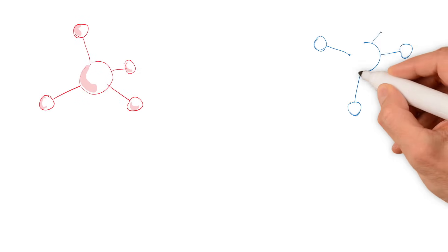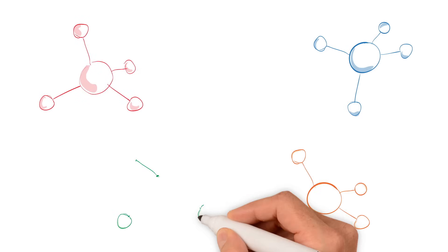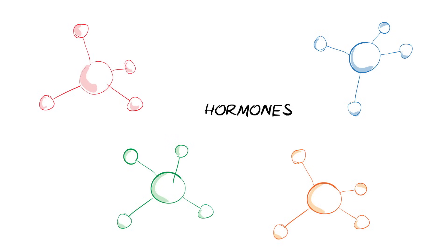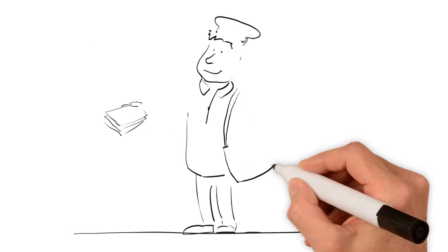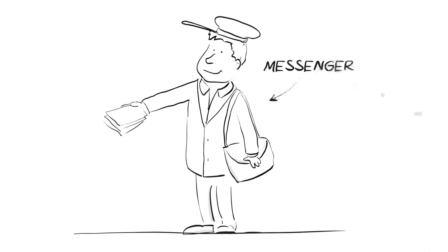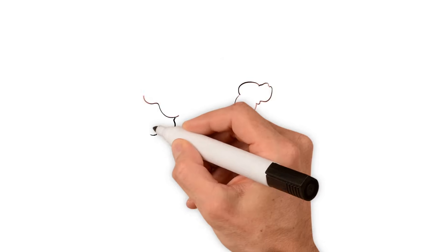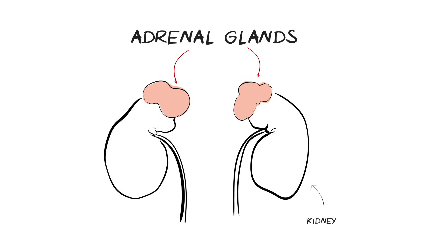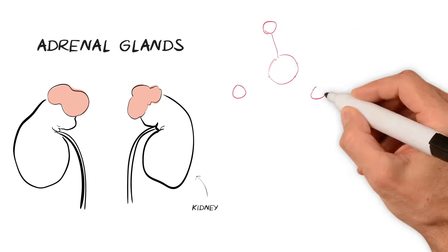CAH is a condition about hormones. You may have heard of the word hormone before, as there are lots of different types in the body. A hormone is just a chemical messenger, sending a message from one part of the body to another via the blood. The adrenal glands lie on top of each kidney, and their main job is to make hormones.